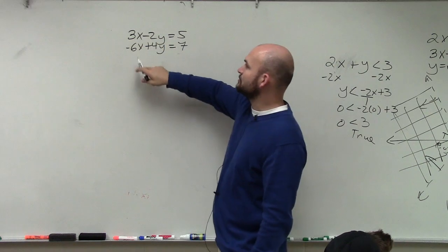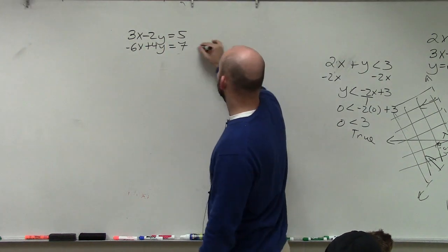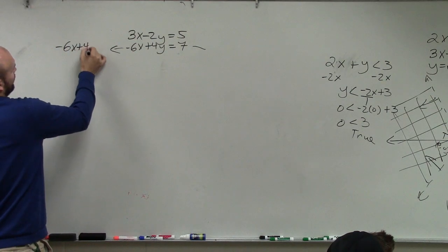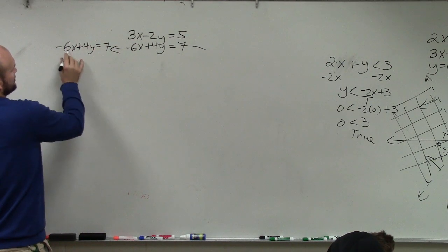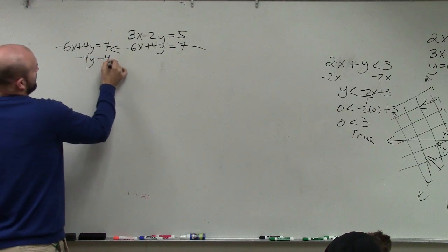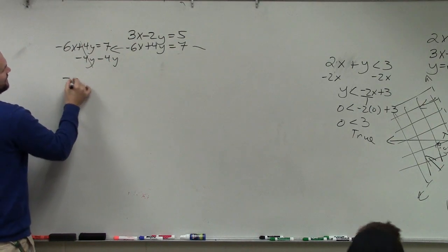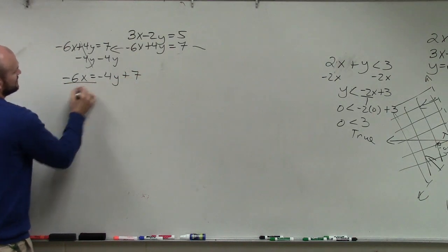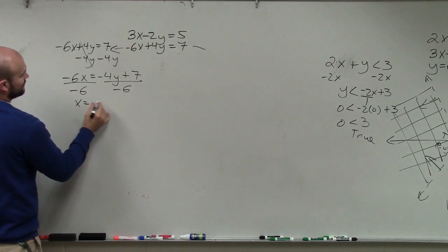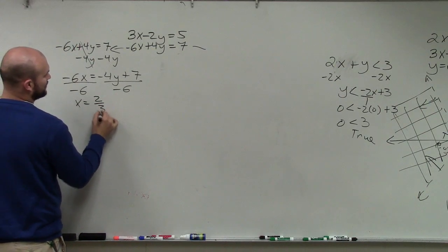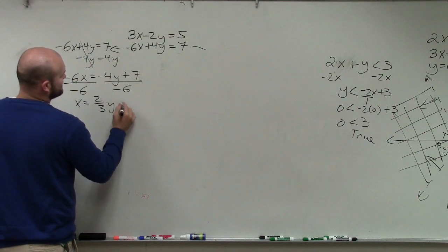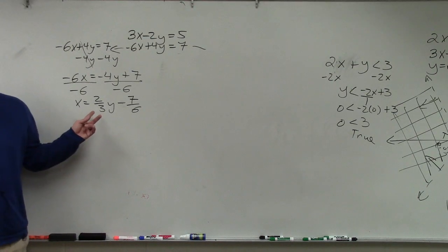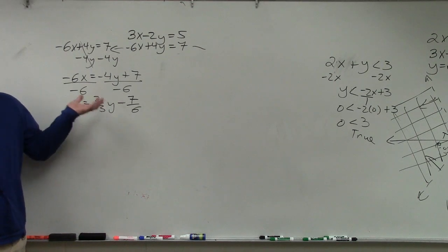So let's go ahead and solve for this x. If I was going to do the same process I did last time, I would take negative 6x plus 4y equals 7. To solve for x, you subtract 4y and you get negative 6x equals negative 4y plus 7. Divide by negative 6, you get x equals a positive 2 thirds y minus 7 sixths. Do you guys want to do substitution with these fractions? No, right? So you can see how it's, yes?